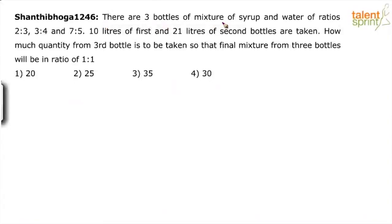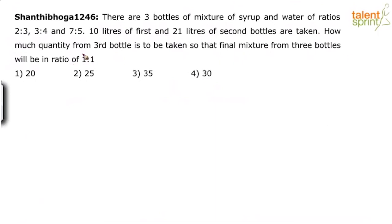There are three bottles of mixture of syrup and water of ratios 2:3, 3:4, and 7:5. Ten liters of the first and 21 liters of the second bottles are taken. How much quantity from the third bottle is to be taken so that the final mixture from the three bottles will be in the ratio of 1:1?